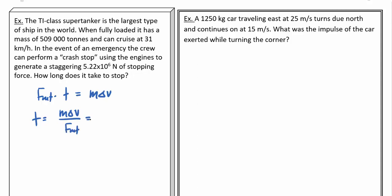Now, the mass of the supertanker as we said, we're going to put that in kilograms. So, that's 5.09 times 10^8 kilograms. And then the change in velocity. Well, we're going from 31 kilometers an hour to zero. And 31 kilometers an hour if we divide that by 3.6 we'll find that that's right around 8.61 meters per second.